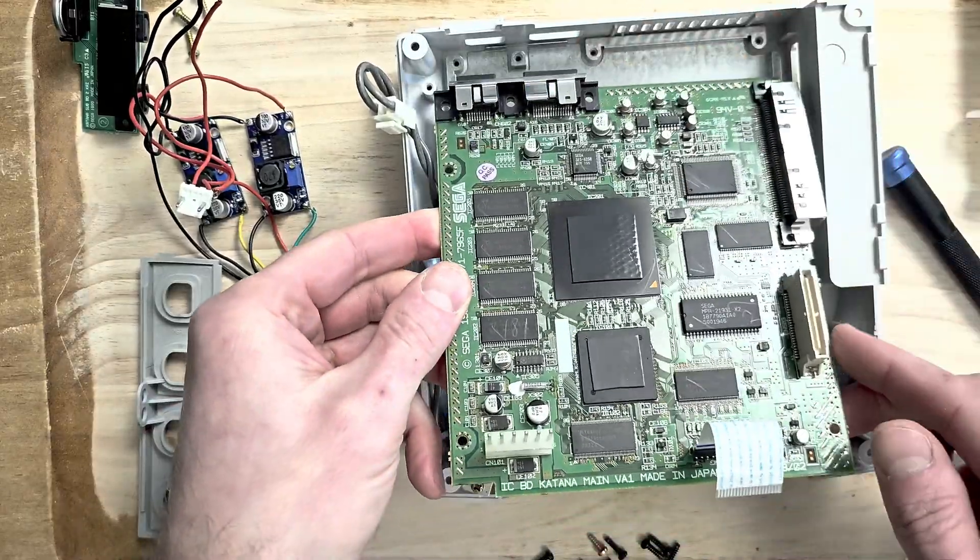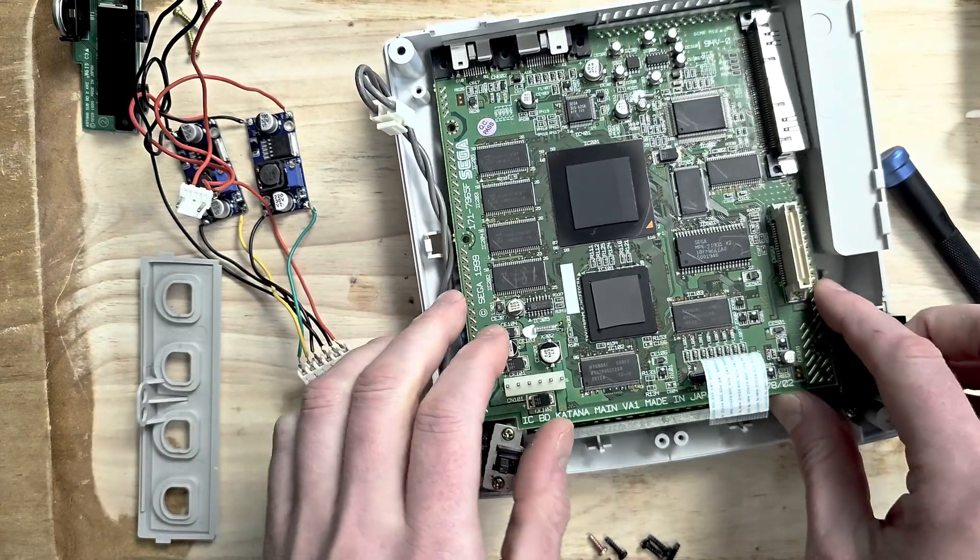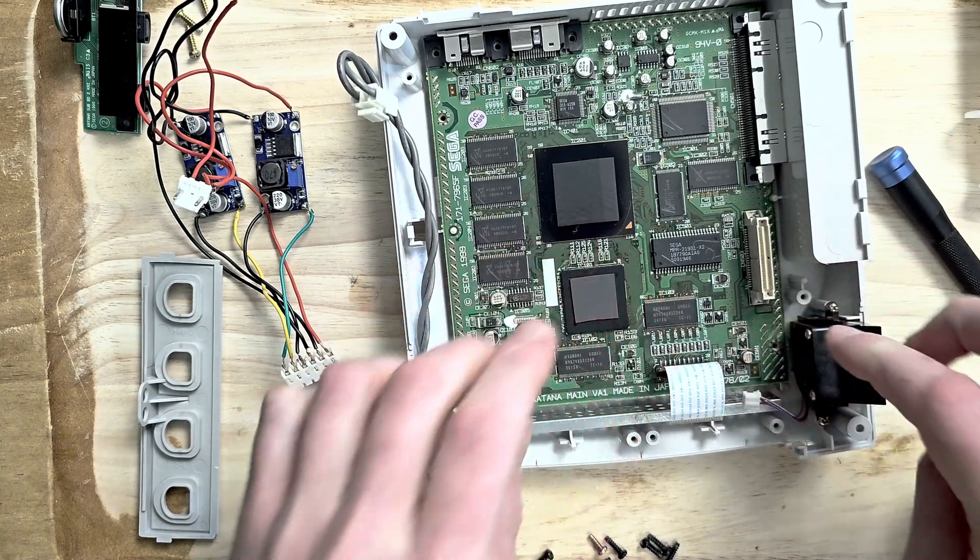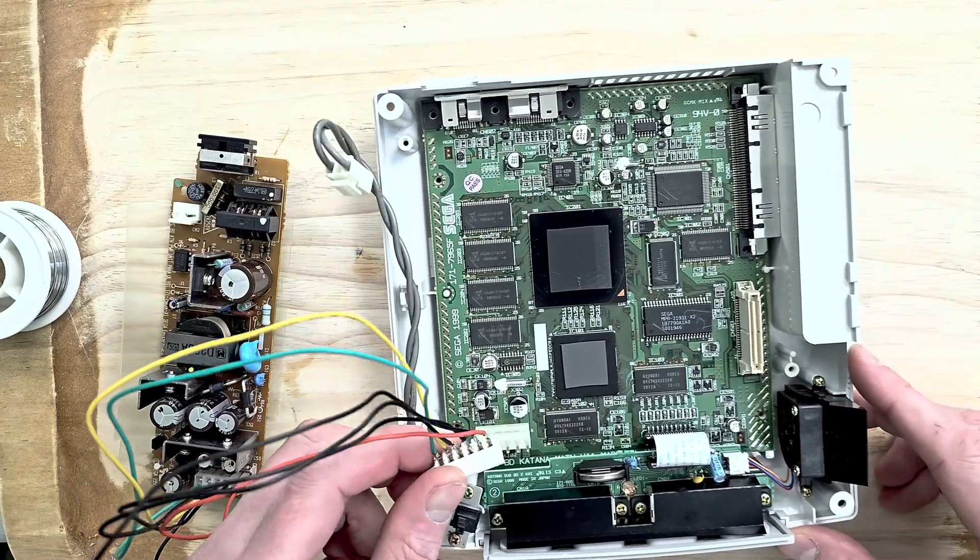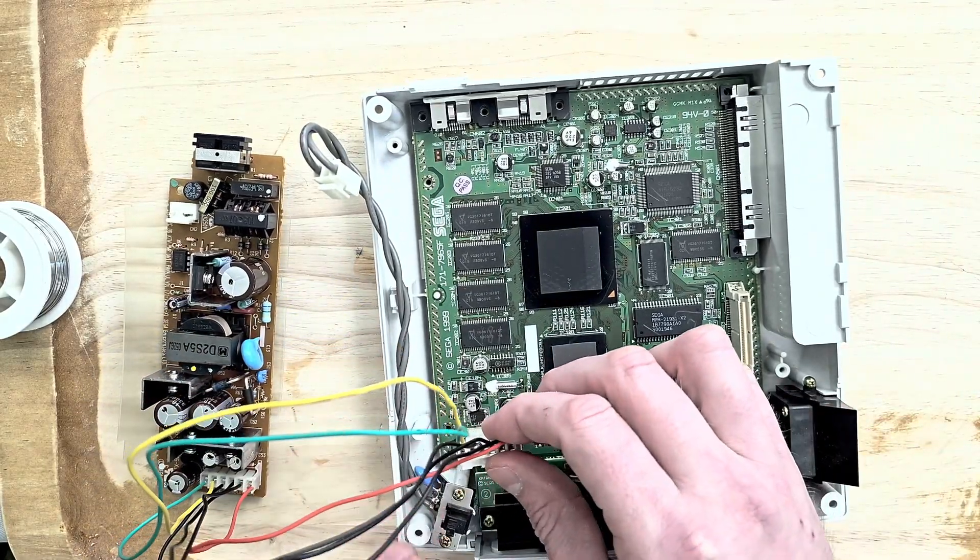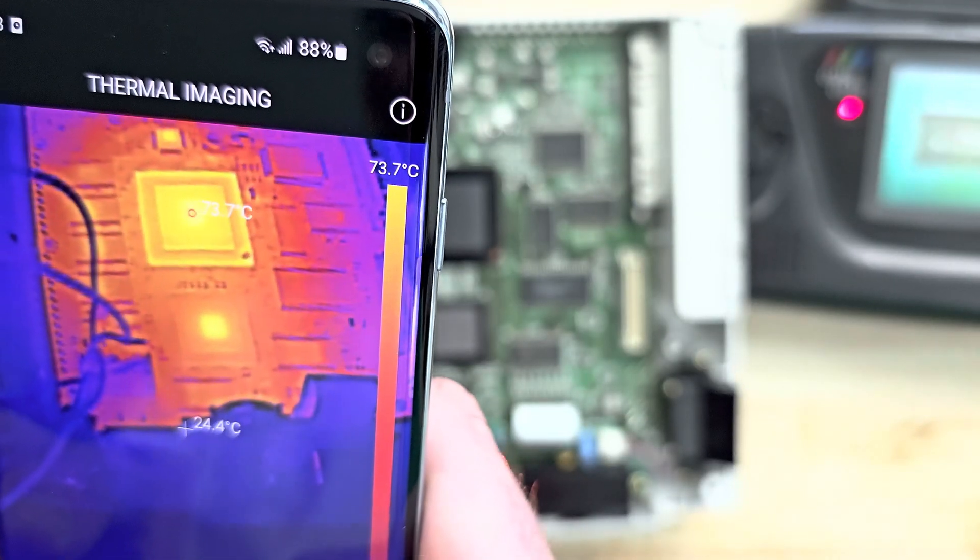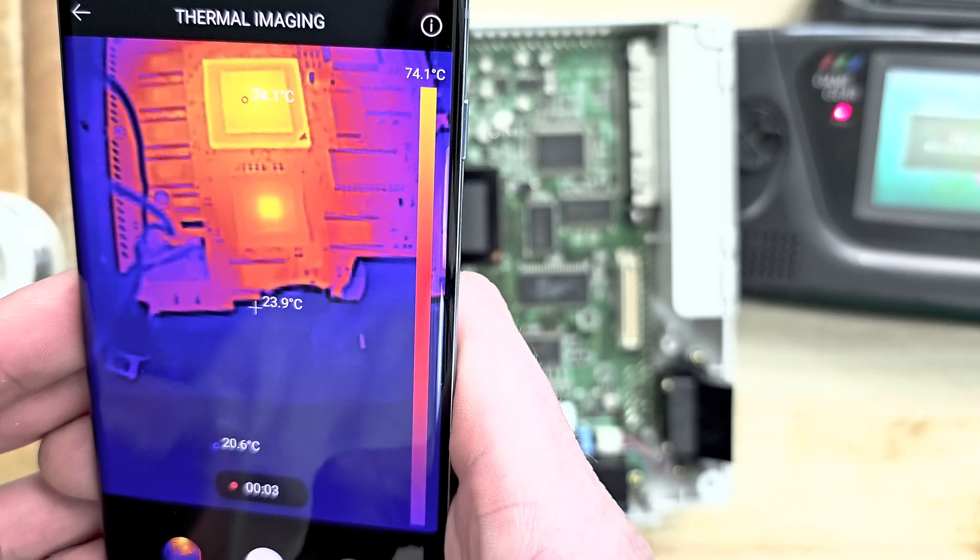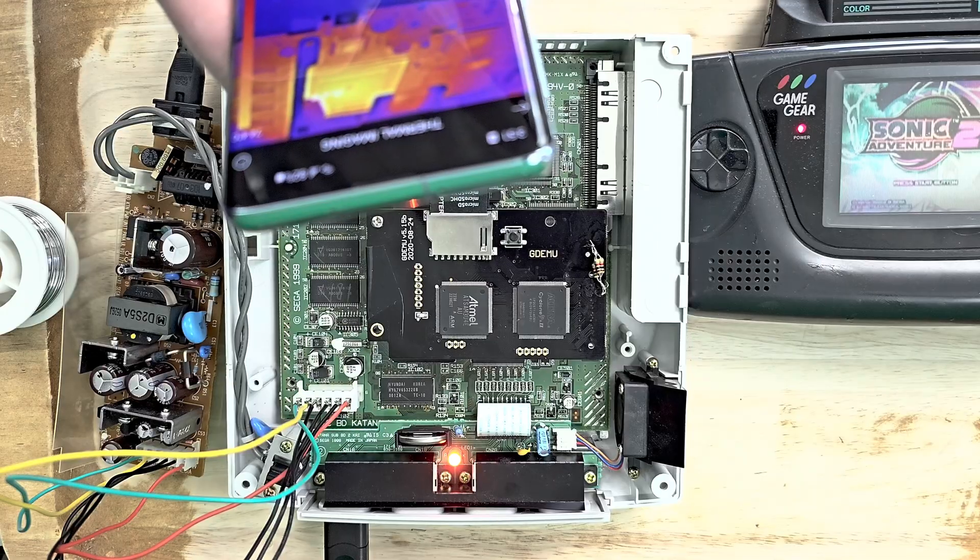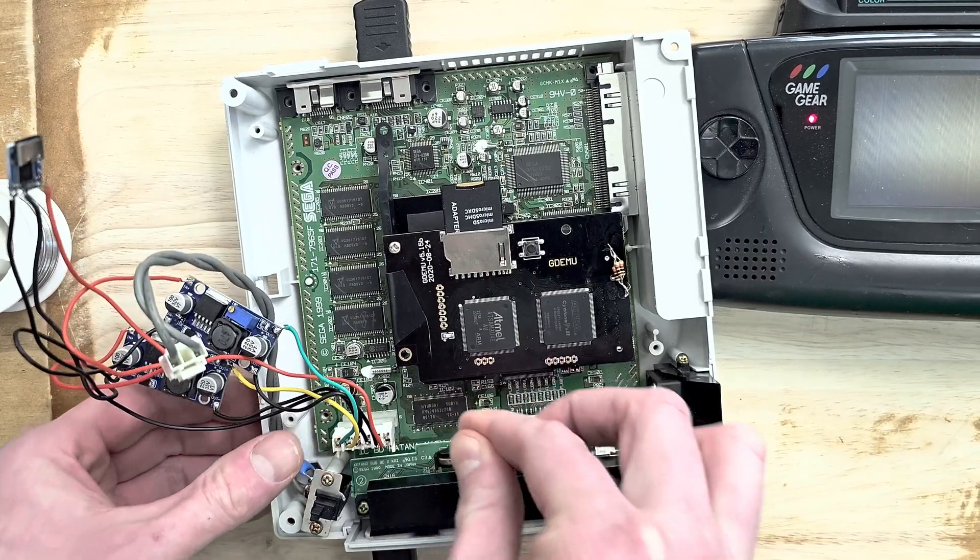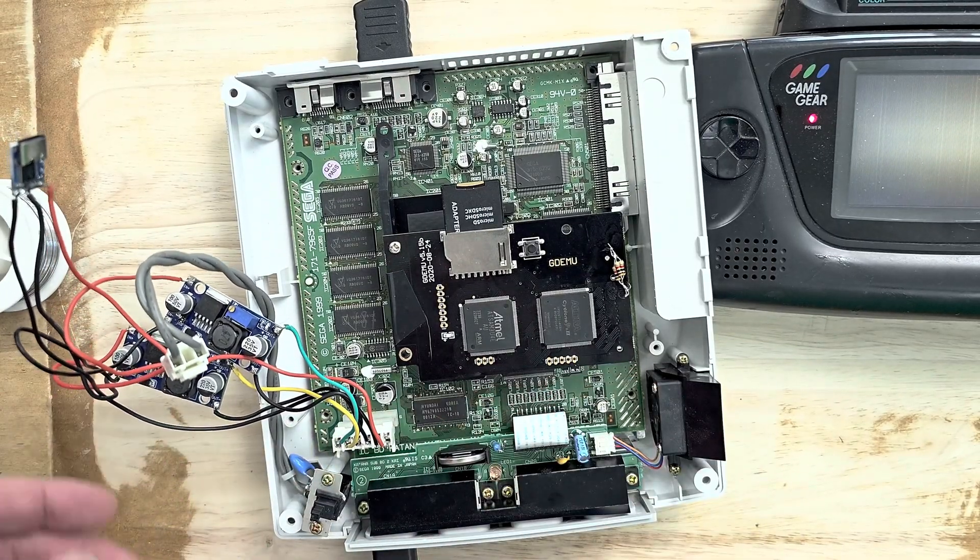Being that this project has been operating on low voltage most of the time, let's assess how reliable and safe it is in this situation. To do this we'll need to know how much heat the stock Dreamcast produces first. Let's remove the old power supply so that we can get a good look at the main board. Checking the heat around the Dreamcast we can see that the CPU is the main heat source, but it stays below 78 degrees even accounting for the GD-EMU.